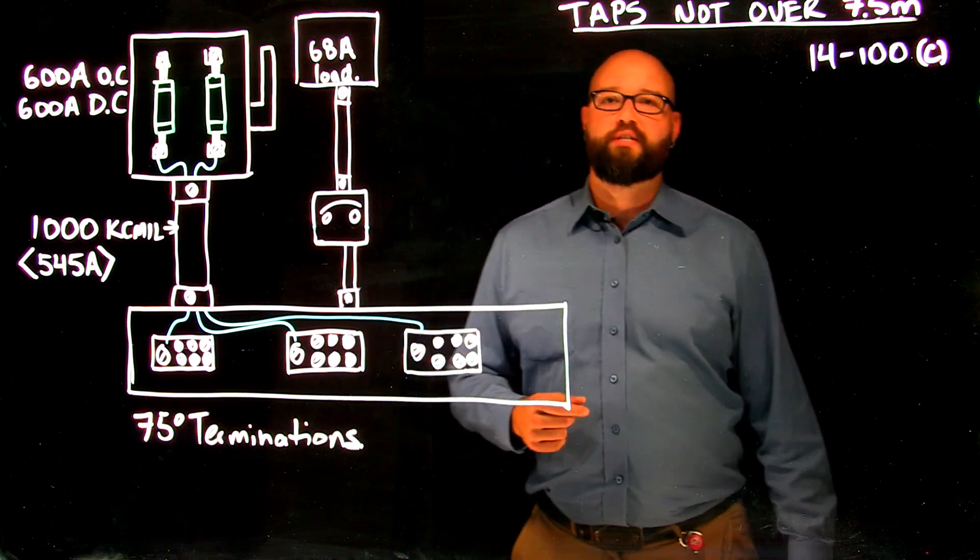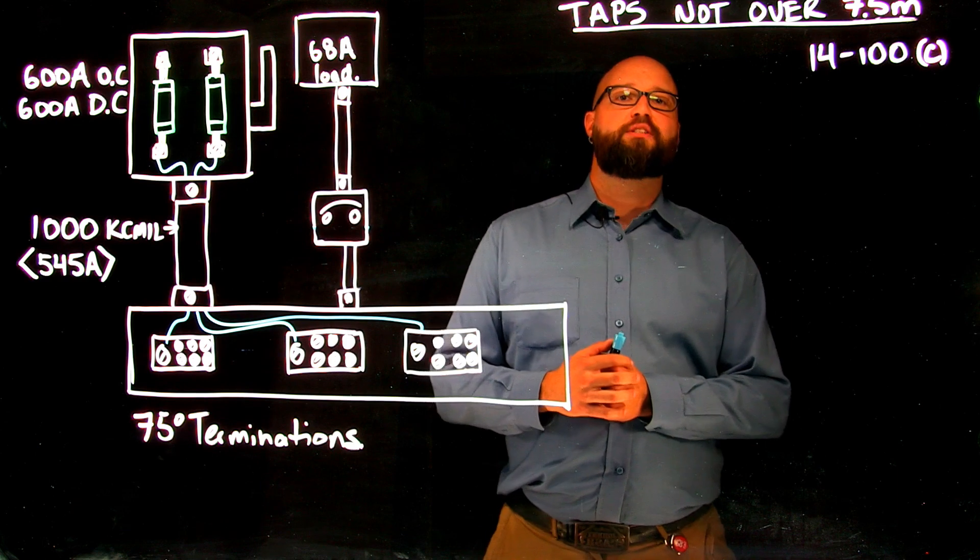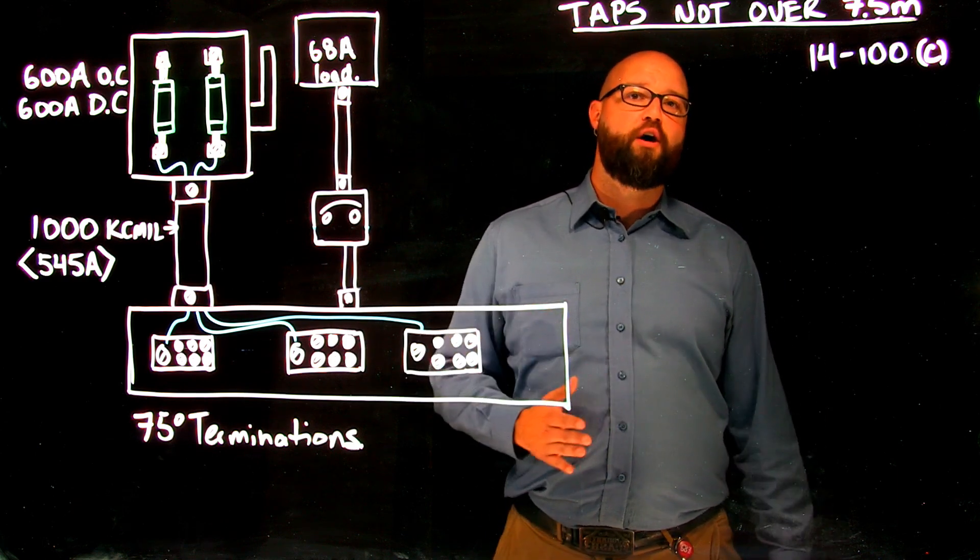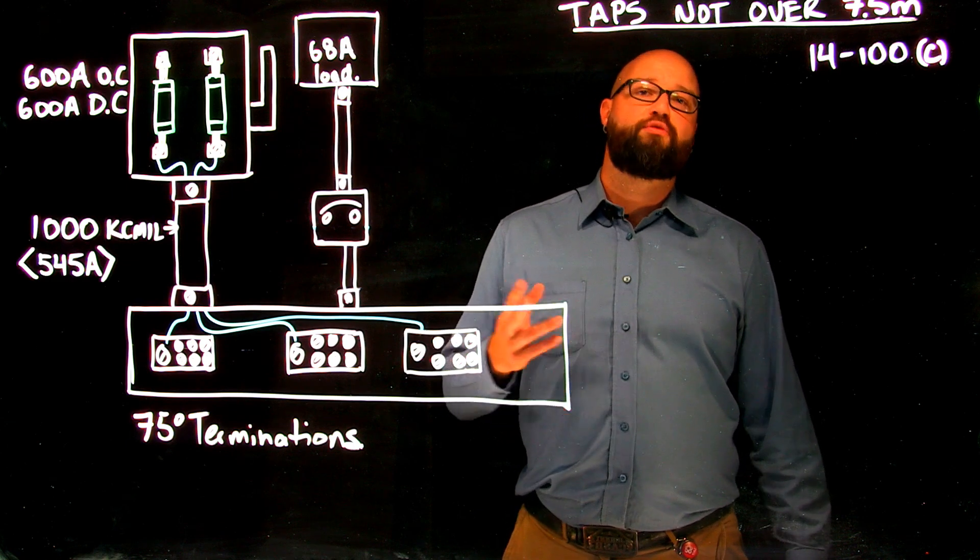In previous videos we looked at voltage drop applications as well as what happens when our tap conductor is up to and including three meters in length.